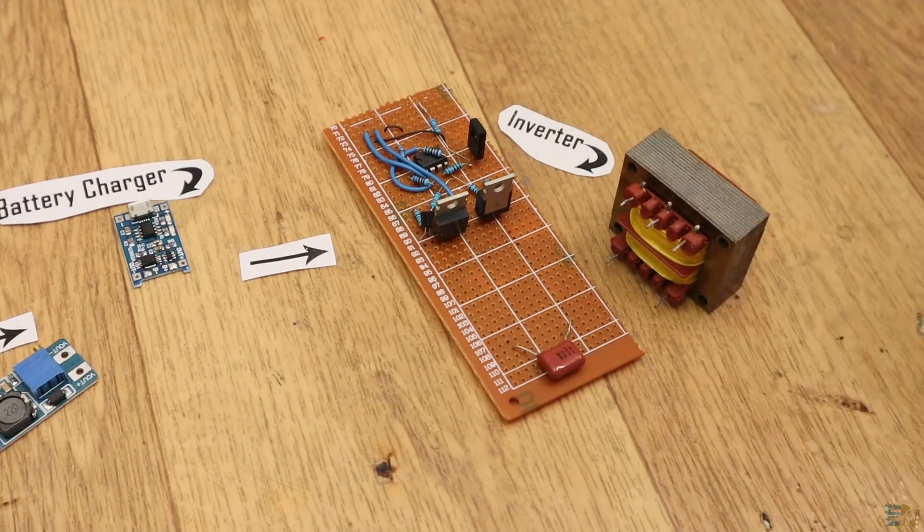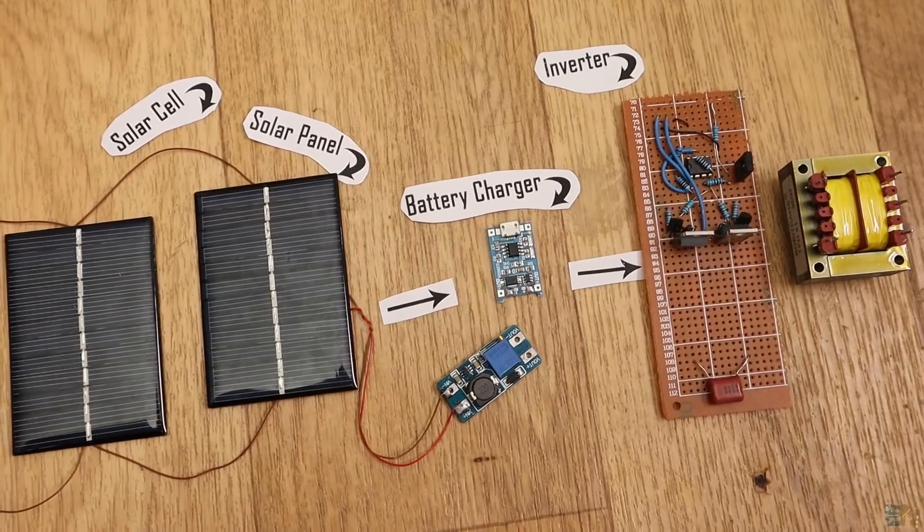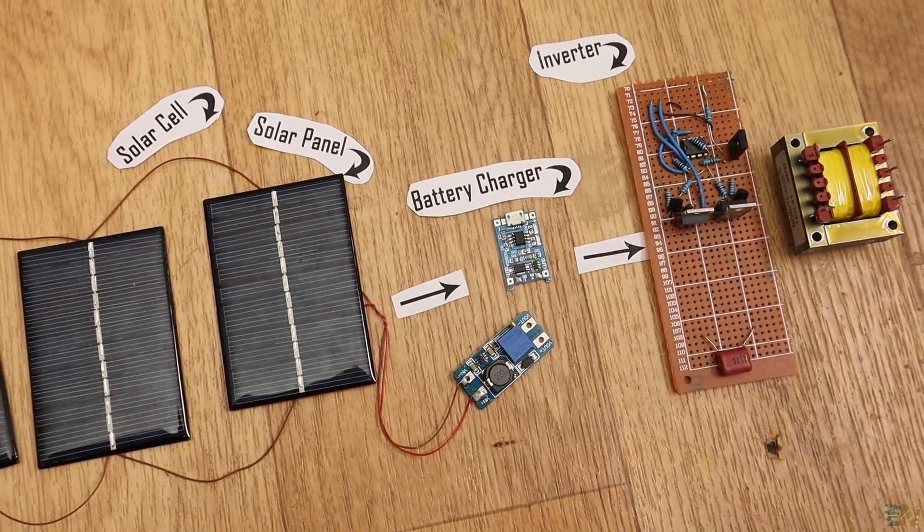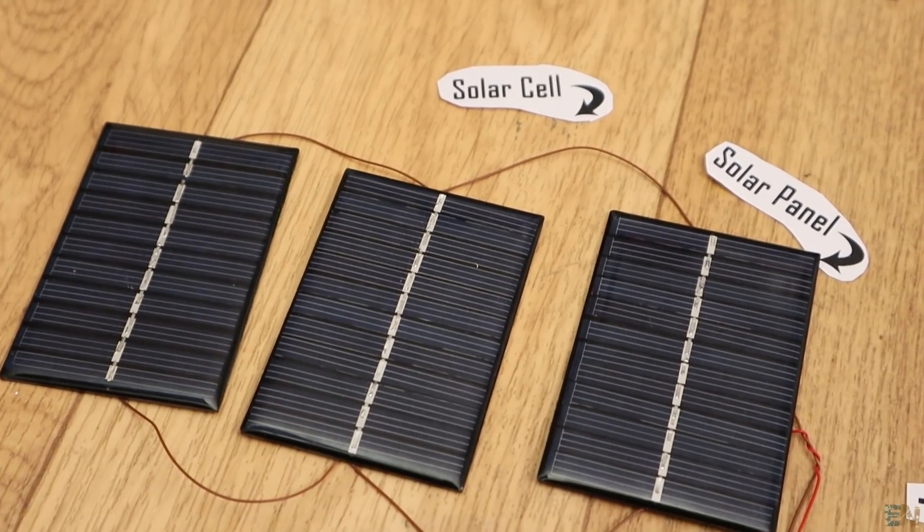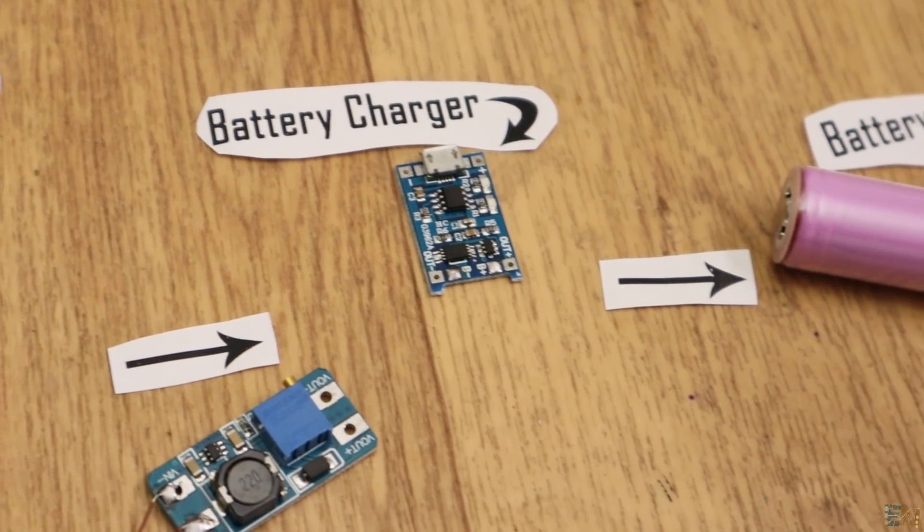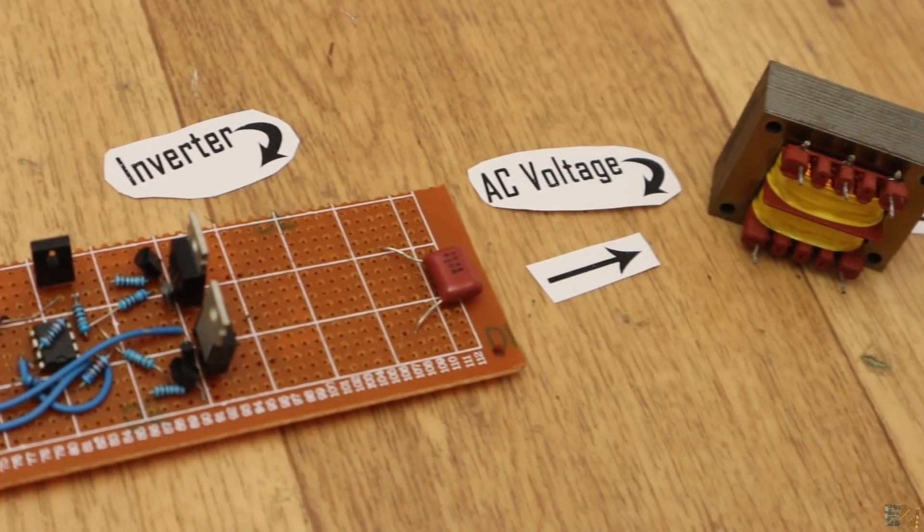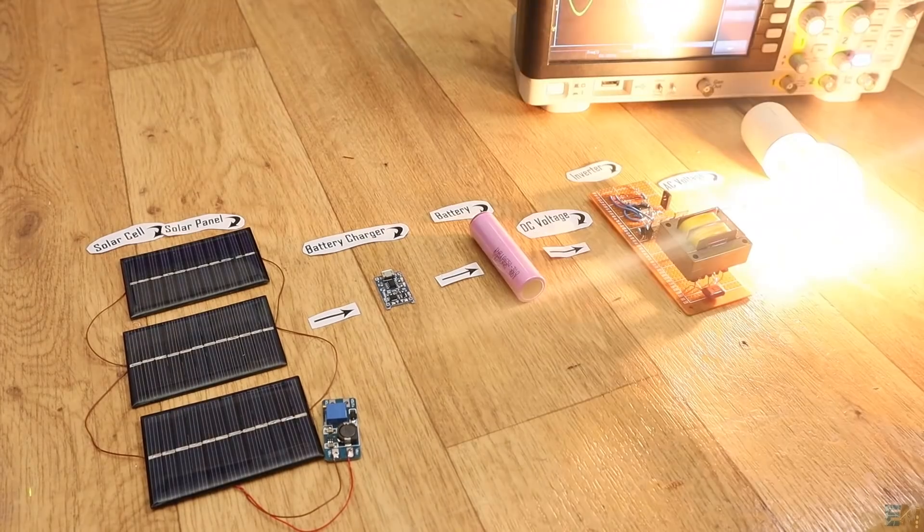Ok, so once we have our 24V AC voltage, all we need is to increase that voltage using a transformer and that's it. We get the energy from the sun using the panels and then we store it into the batteries using the charging circuit. Then we create our AC voltage using the inverter and boost it up with the transformer. This is a very general setup.